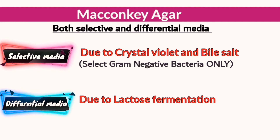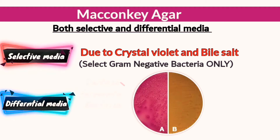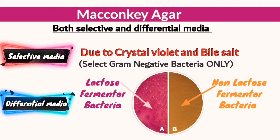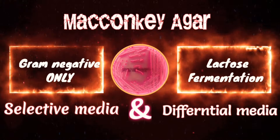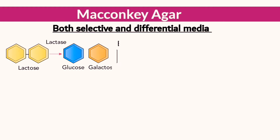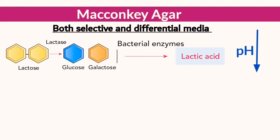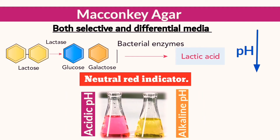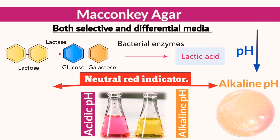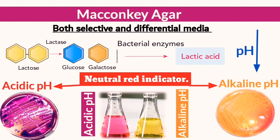MacConkey agar is also a differential media due to the presence of lactose. Some bacteria have the ability to ferment lactose and others do not. When lactose is fermented, it is converted into acid that lowers the pH. MacConkey agar contains neutral red indicator to detect pH change: in alkaline pH it is colorless, while in acidic pH it turns pink. Pink colonies indicate lactose fermentation.